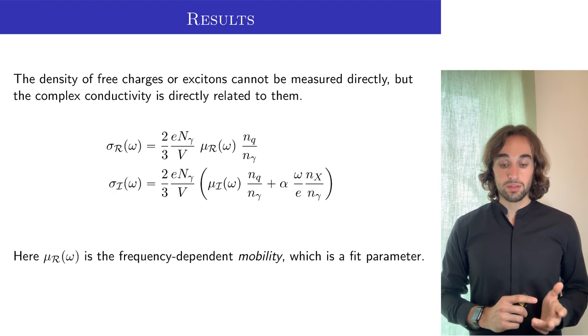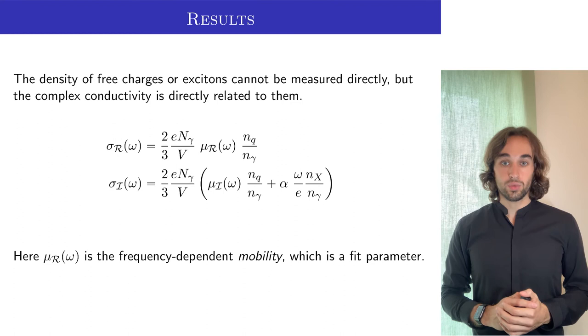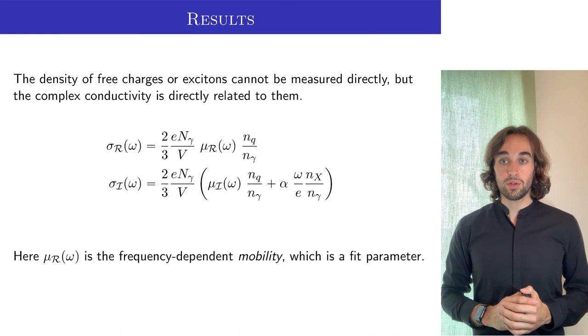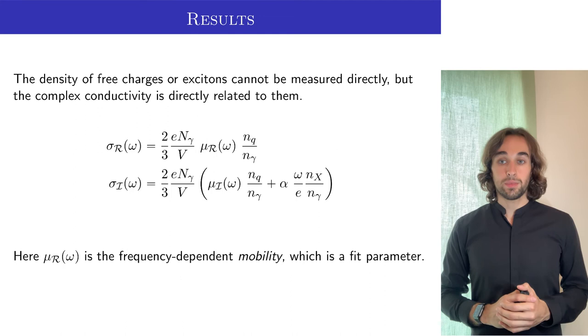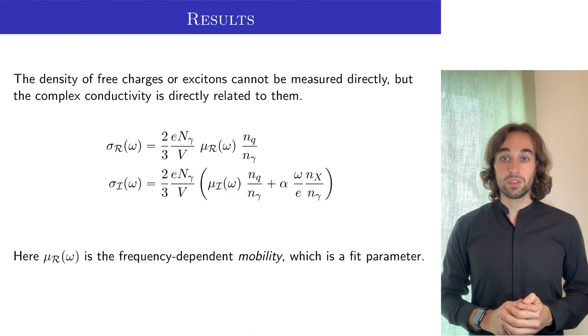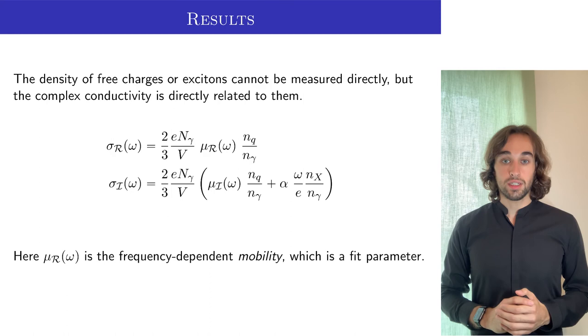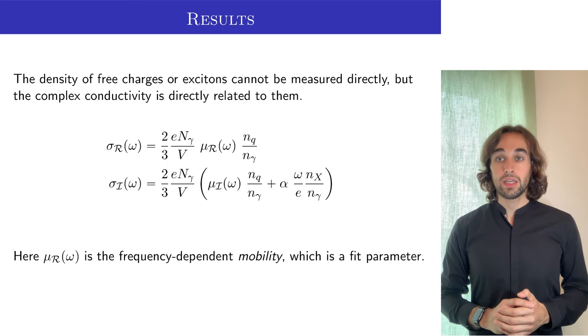Now, as I said before, it is not possible in an experiment to measure directly these densities, so we must connect the information provided by the probe laser, that is the complex conductivity, with the densities that we just computed. We will do this by applying this simple model that I'm showing here, which introduces some fitting parameters that we can then compare with other results in the literature, to confirm that our theory gives reasonable physical results. Specifically, we see there that we introduce the parameter mu, which is the frequency-dependent mobility, which is the main indicator that we will use for determining if our theory gives correct results.